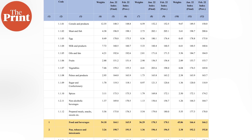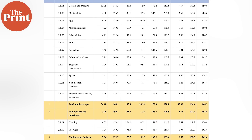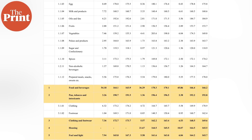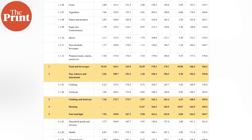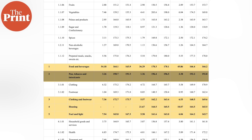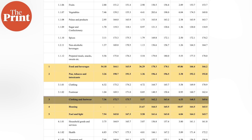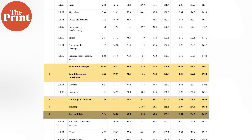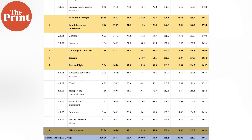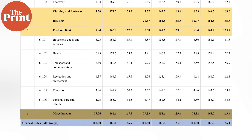Under the current CPI, around 300 items are considered for measurement. These are broadly classified under six heads: foods and beverages, paan, tobacco and intoxicants, clothing and footwear, housing, fuel and light, and miscellaneous.